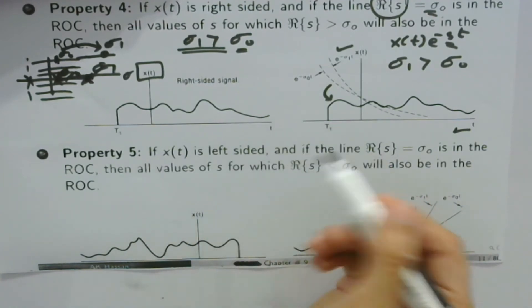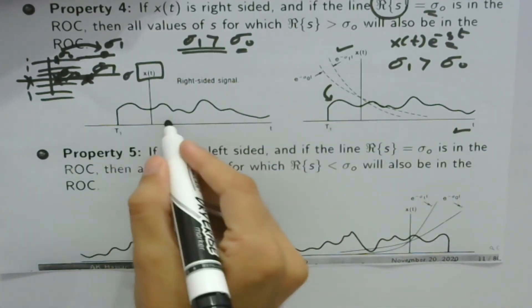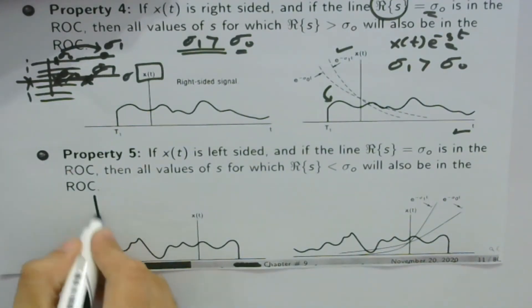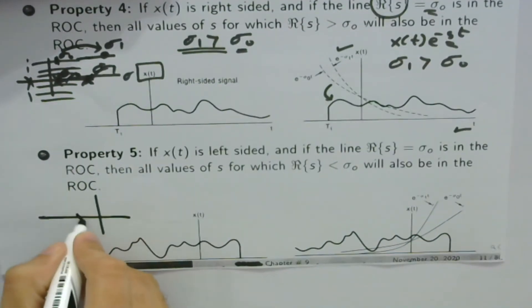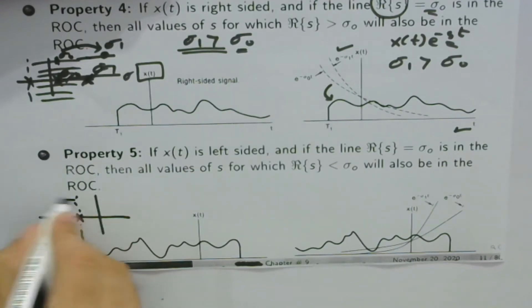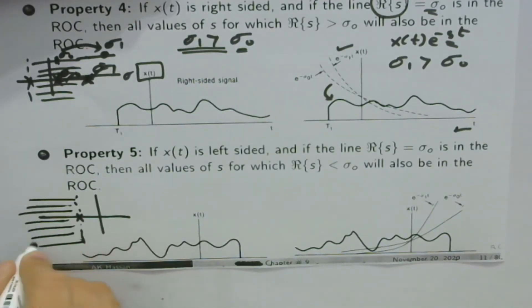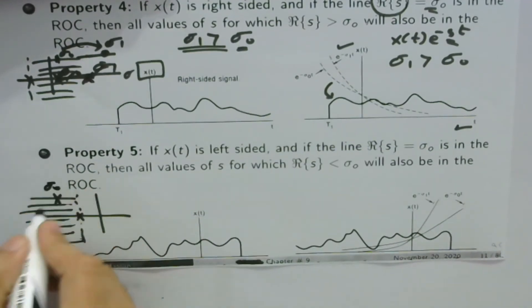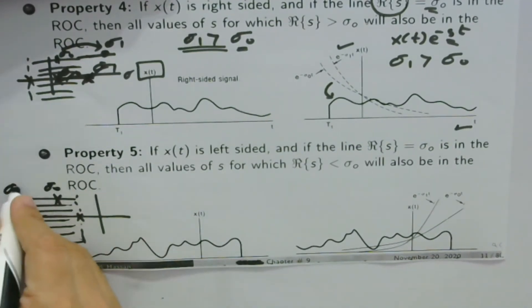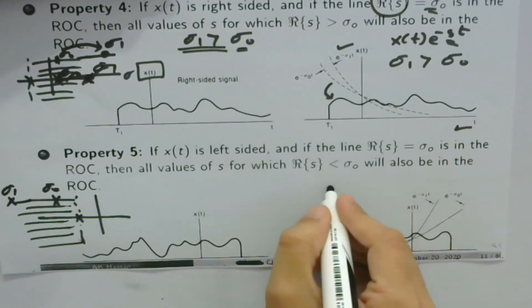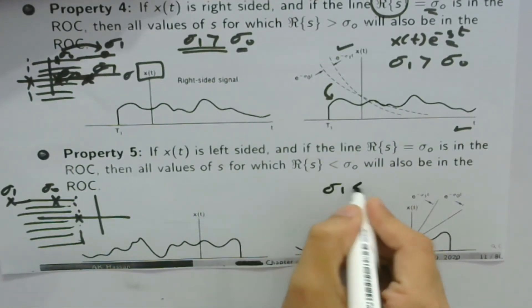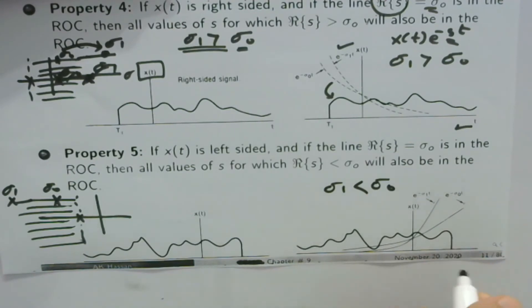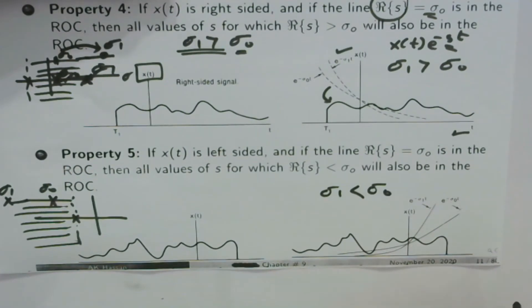Property 5 is the counterpart for left-sided signals. For a left-sided signal, if σ₀ is in the ROC, then all values σ₁ < σ₀ are also in the ROC, giving a region extending to the left in the S-plane.